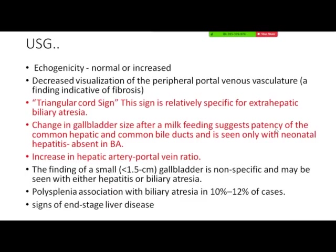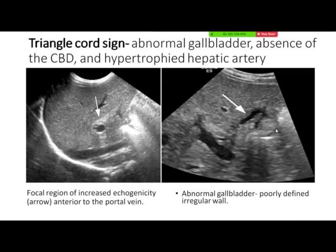Ultrasound features to diagnose biliary atresia: first, echogenicity — it can be raised or normal. There is decreased visualization of peripheral portal venous vasculature because fibrosis occurs in biliary atresia. There is a sign called the triangular cord sign — at the level of the division of the portal vein, there is a tubular structure with increased echogenicity, which is the remnant of the CBD.